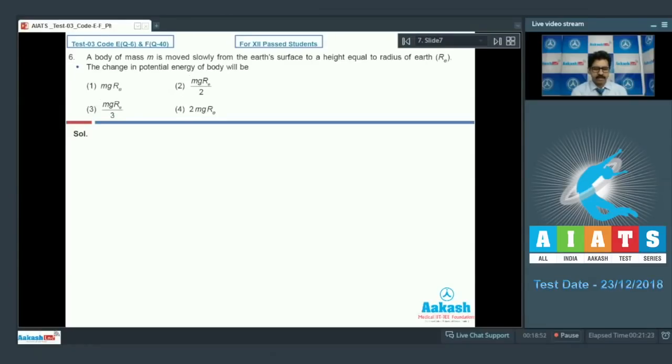Question number six: A body of mass m is moved slowly from the earth surface to a height equal to the radius of earth. The change in potential energy of the body will be. Here the height is very large, it is the radius of earth. In case of small height, the gain of potential energy you generally use is mgh, but here the height is very large so gain of potential energy can be obtained by the general formula.